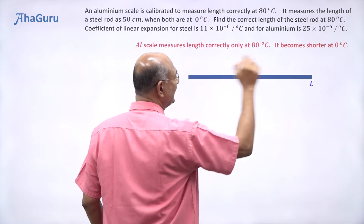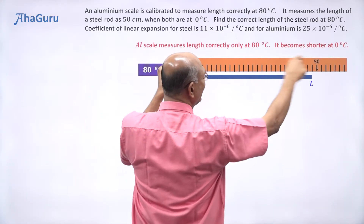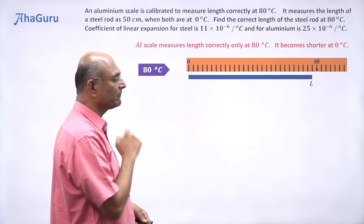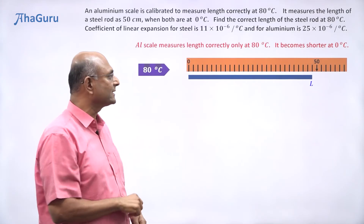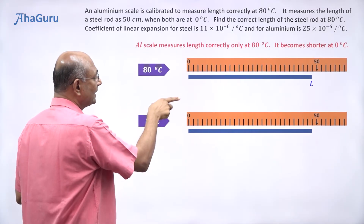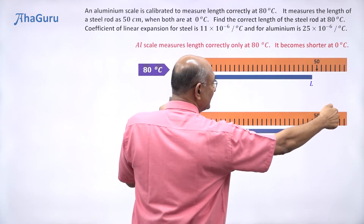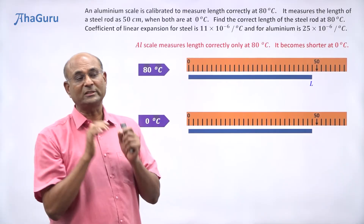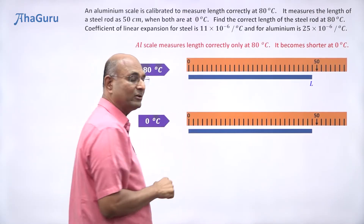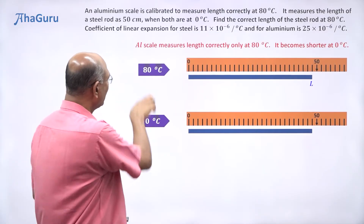At 80 degrees Celsius, this is the steel rod — let us say its length was L; it is not 50 centimeters, it is some length L. If you want to measure its length using the aluminum scale, the 50-mark will not match with that L. From 80, I am going to reduce the temperature to 0 degrees Celsius. When the temperature reduces, the aluminum scale will shrink and the steel rod will also shrink.